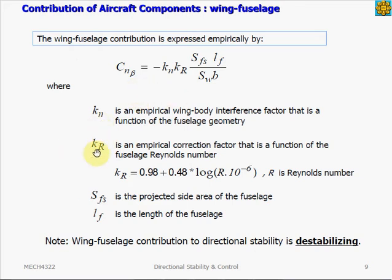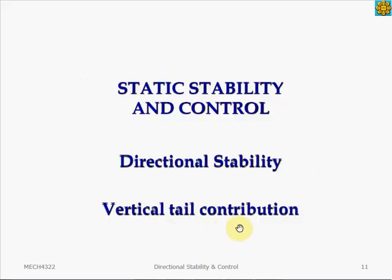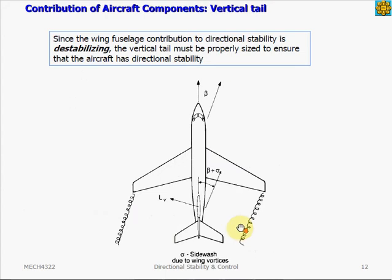The empirical terms kn and kr can be found using a table, also obtained empirically. They are functions of the Reynolds number and the geometry of the wing and fuselage. Now let's look at the vertical tail's contribution towards directional static stability. We've already discussed how the vertical tail stabilizes the aircraft in a yaw disturbance, and here we want to know how to properly size that vertical tail to achieve the right amount of directional stability.